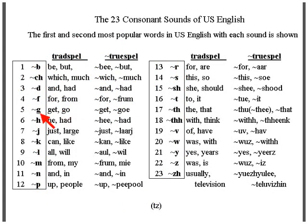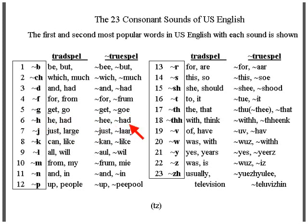The G sound — notice that's the hard G — as in 'get' and 'go.' Then the H sound, spelled with the letter H. Not the most popular word, but examples include 'he' and 'had.'